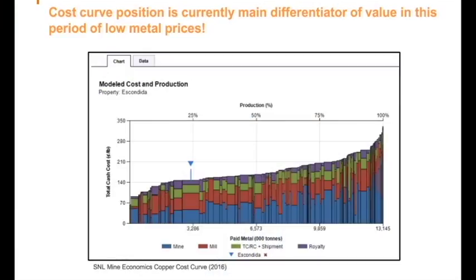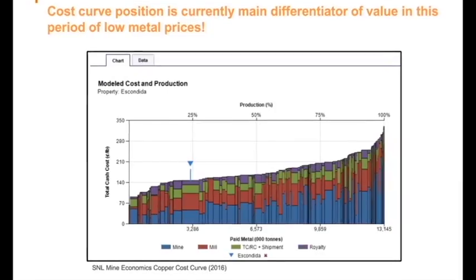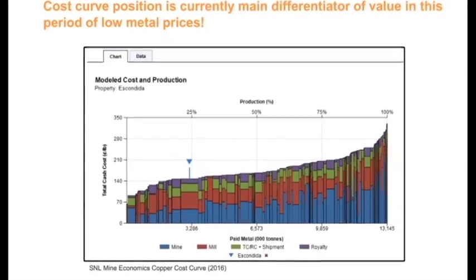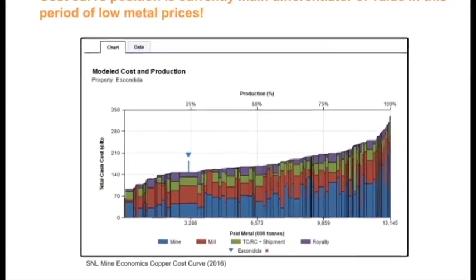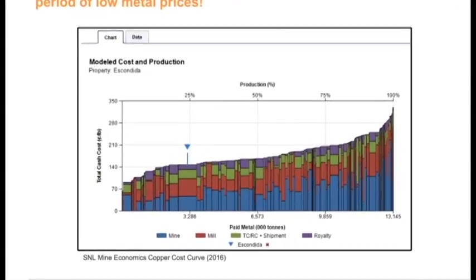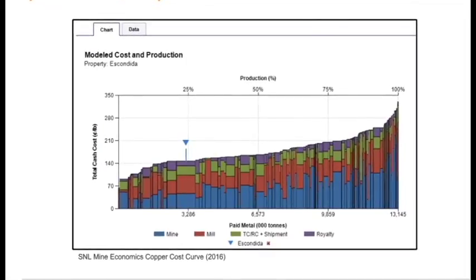And this is straight out of the SNL mine economics tool — a very good little tool. I just took Escondida and found the costs there on the cost curve for copper. And again, this is really becoming a main differentiator in this period of low metals.